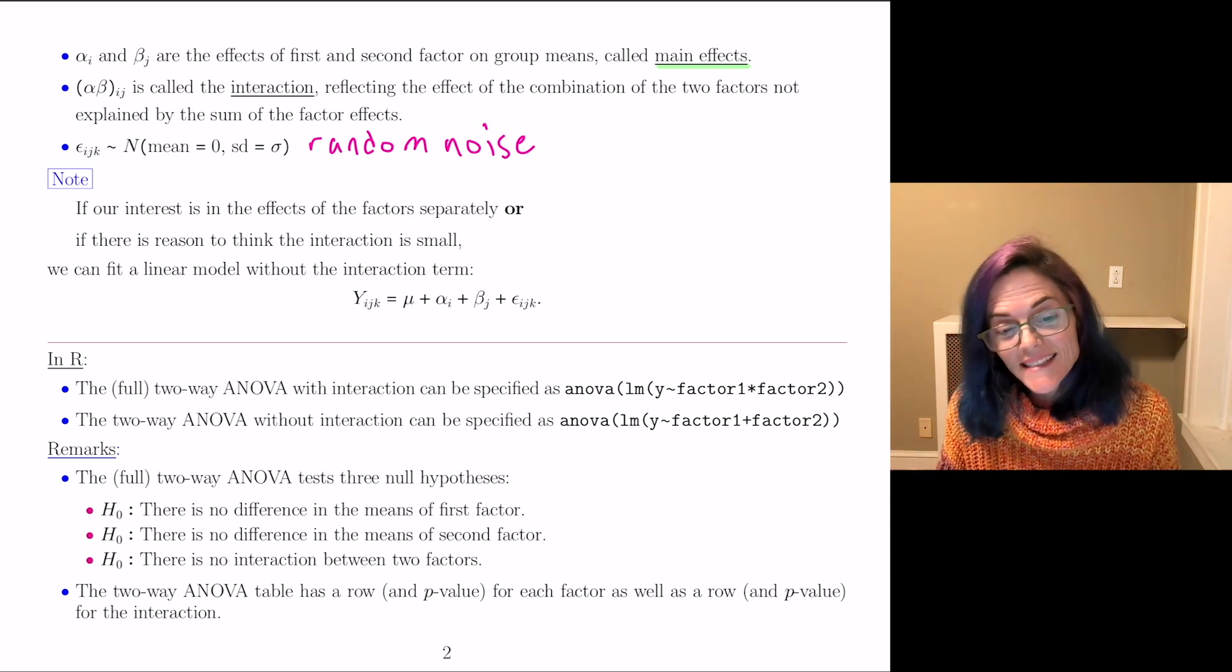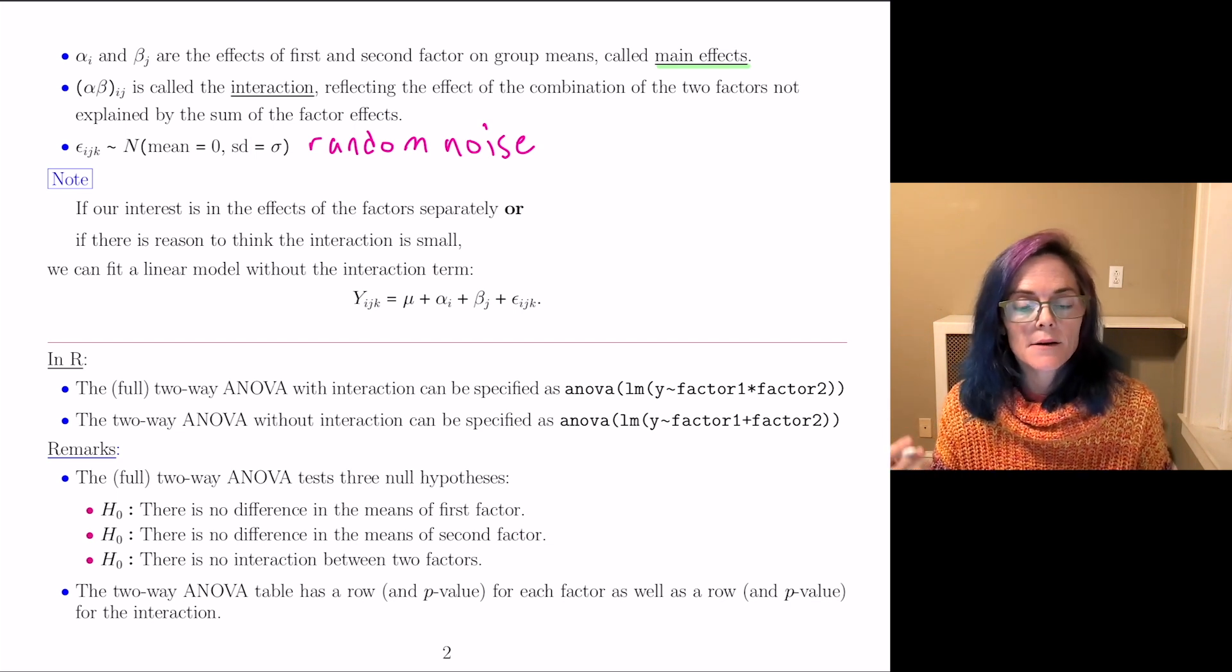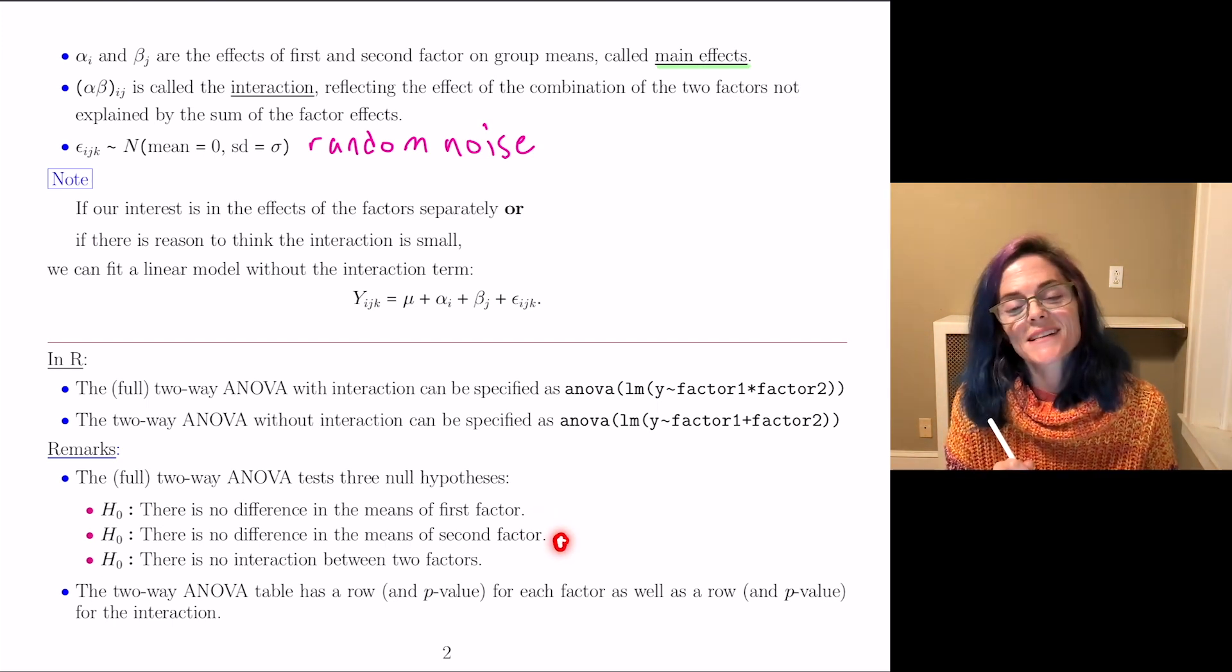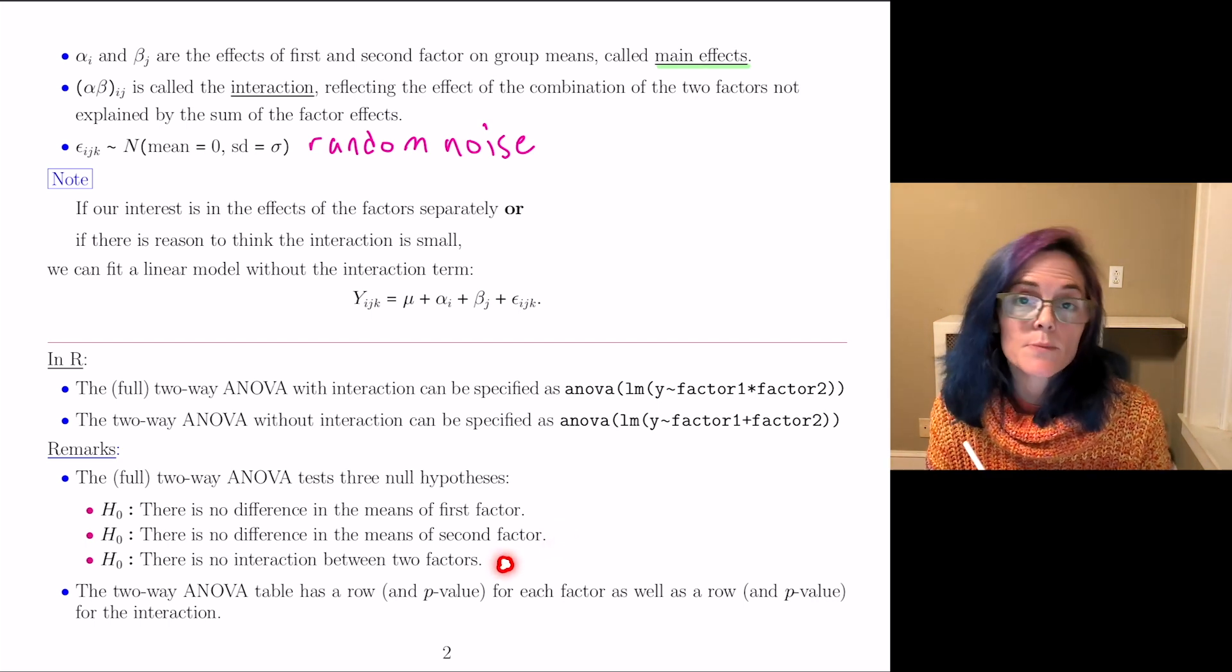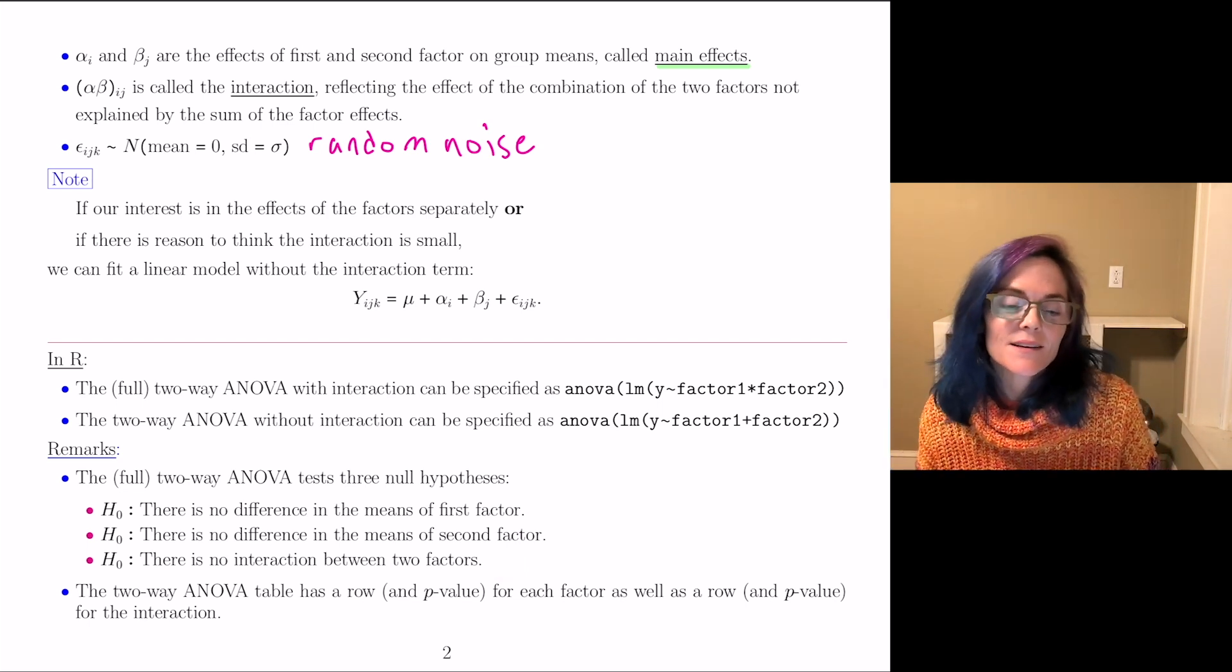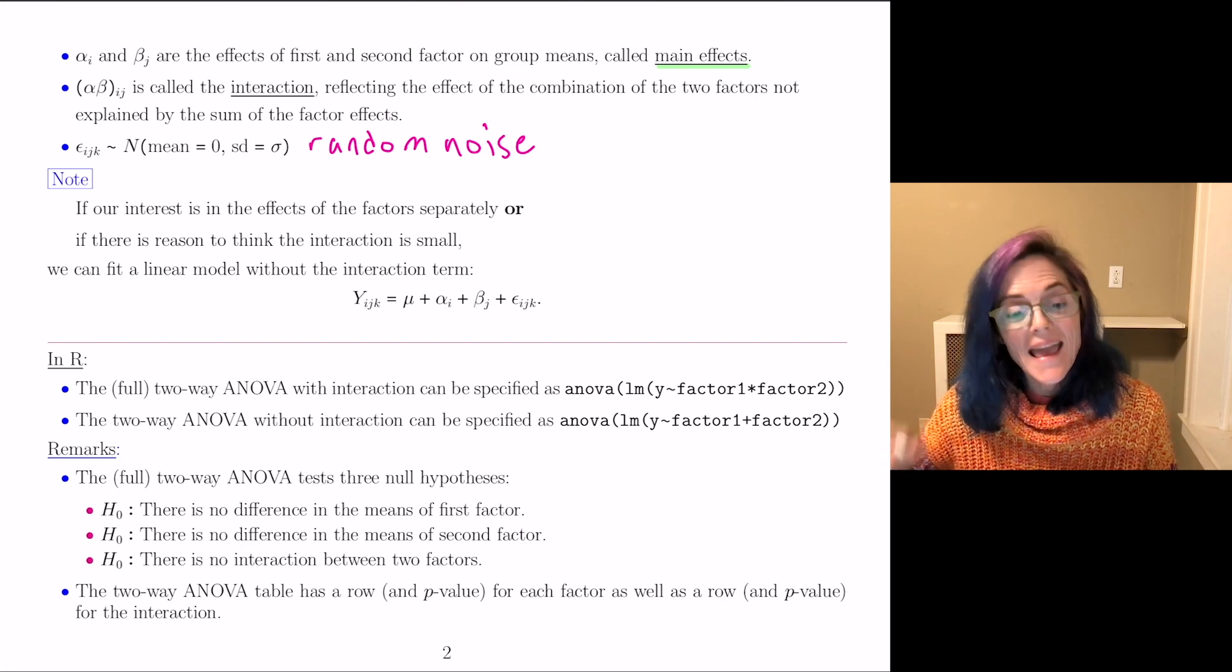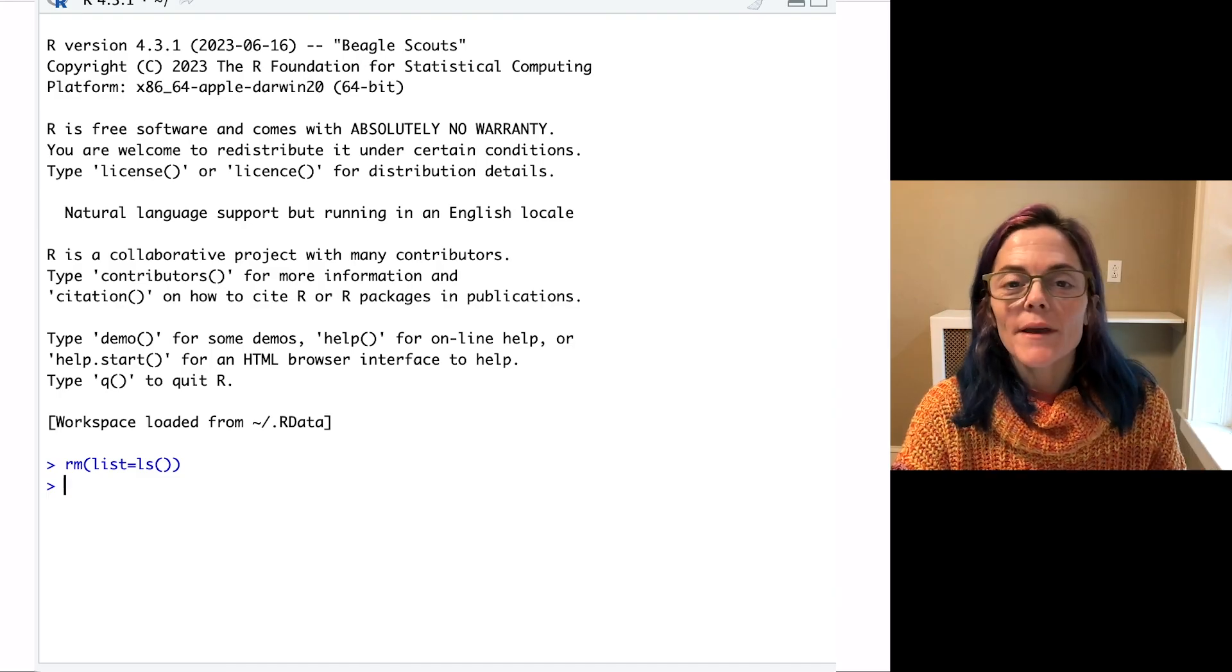So this is the difference in the two different R commands. It's important to understand, and I'll just mention for the full two-way ANOVA, we have three null hypotheses here. First is that there is no difference in the means of the first factor. Second, there is no difference in the means of the second factor. And then the third null hypothesis is there is no interaction between the two factors. So in your ANOVA table, you have three different p-values. The ANOVA table has a row and p-value for each factor. It also has a row and p-value for the interaction.